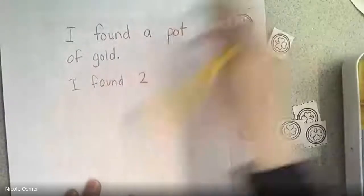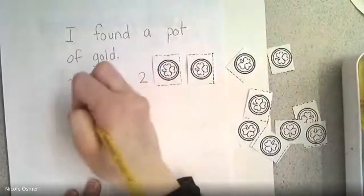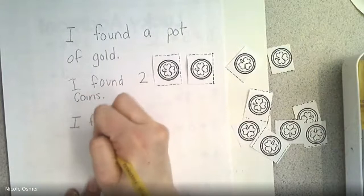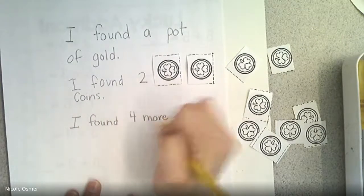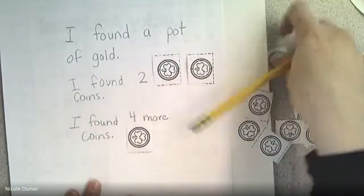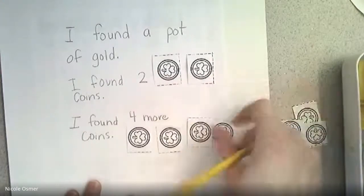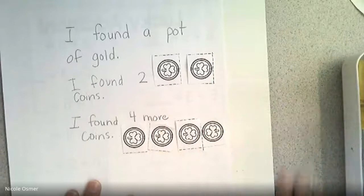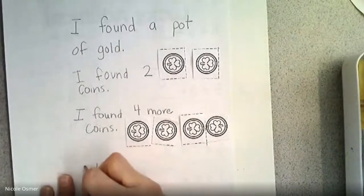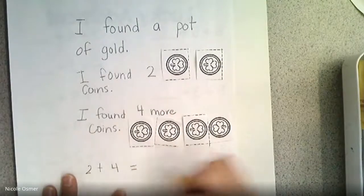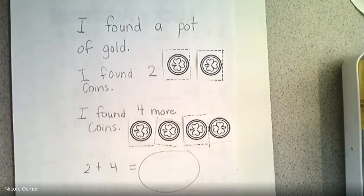And for a bonus, you can do your own story problem. I found a pot of gold. I found two, and I'm going to glue these down after I'm done using them. Two coins. I found four more coins. I glue those when I'm done. How many coins all together did I find? Two and four. Make sure you show me the number sentence equals how many. That is your word problem bonus if you have time. You can pause it for now so that you can finish up and answer that one.